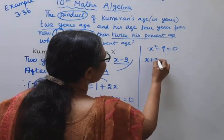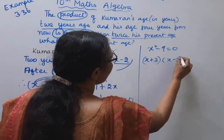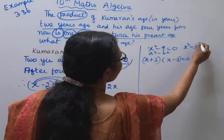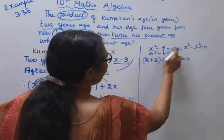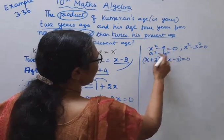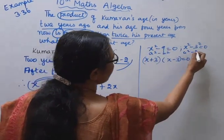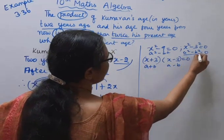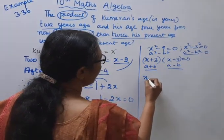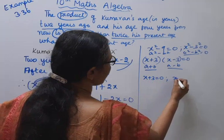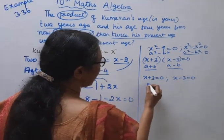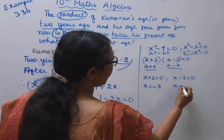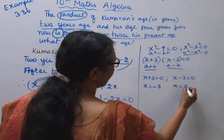Using the identity a squared minus b squared equals a plus b into a minus b: x squared minus 3 squared equals 0, so x plus 3 into x minus 3 equals 0. Therefore x plus 3 equals 0 giving x equals minus 3, or x minus 3 equals 0 giving x equals 3.